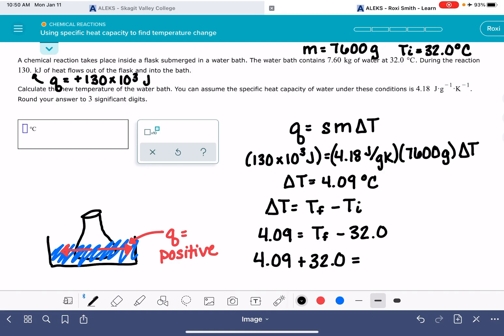The trickiest part about this problem is making sure that you get the signs correct, especially the sign for Q. The second trickiest part of this problem is going to be this temperature change calculation right here, making sure that you're putting everything in the right spot. It looks like our final temperature for this is going to be 36.1 degrees Celsius.